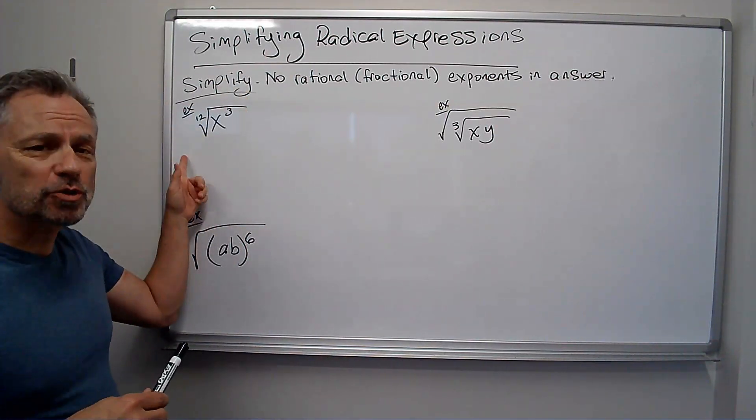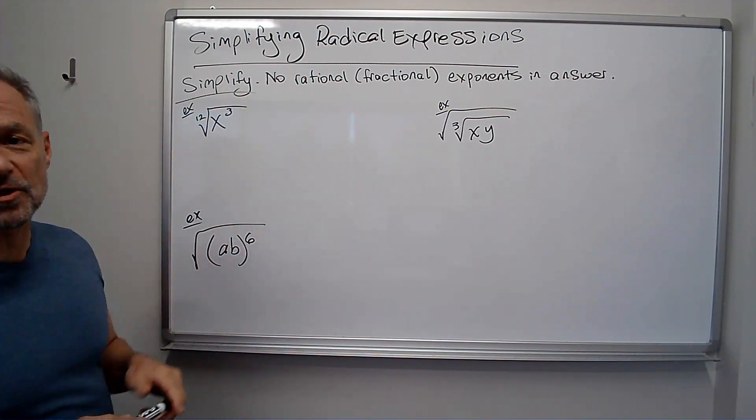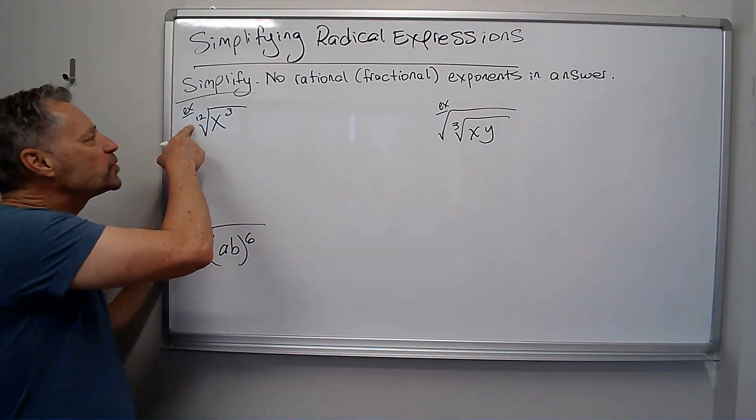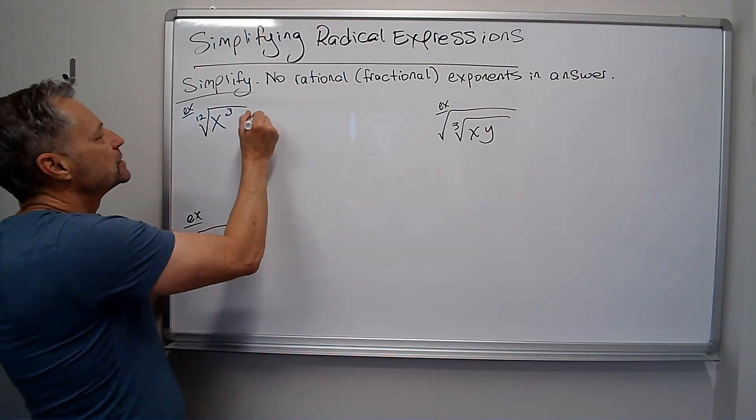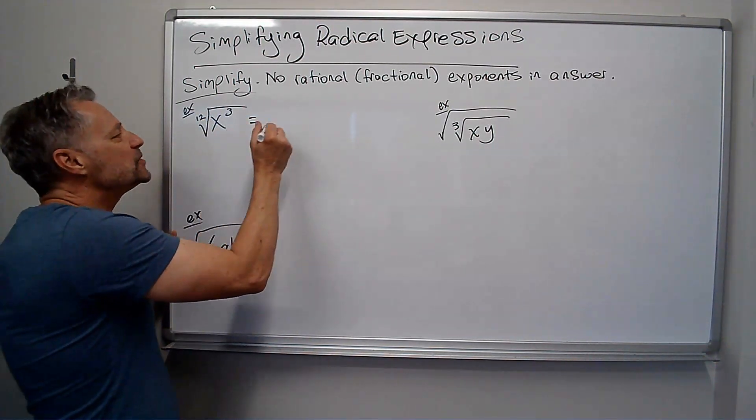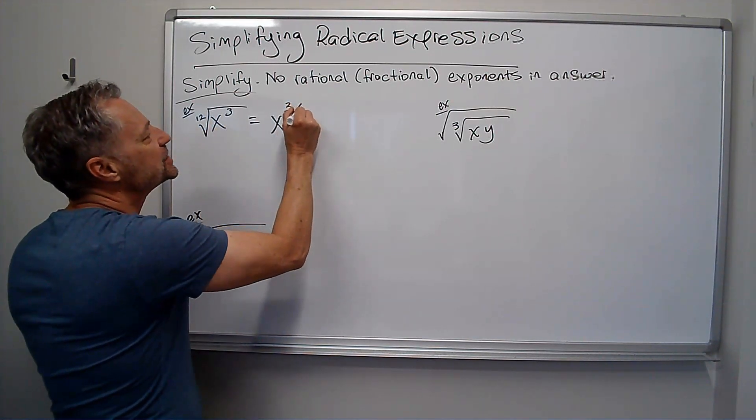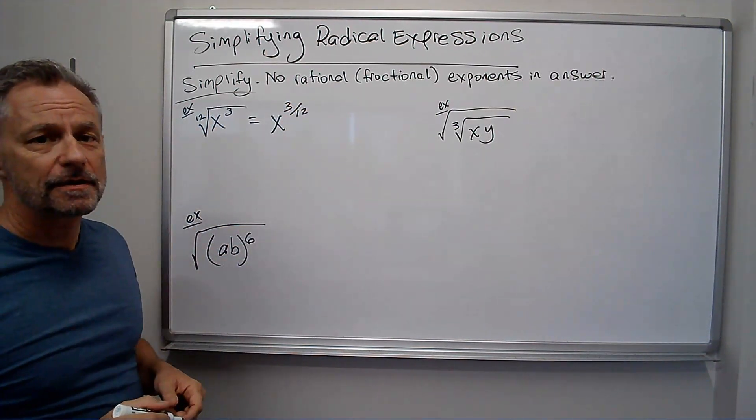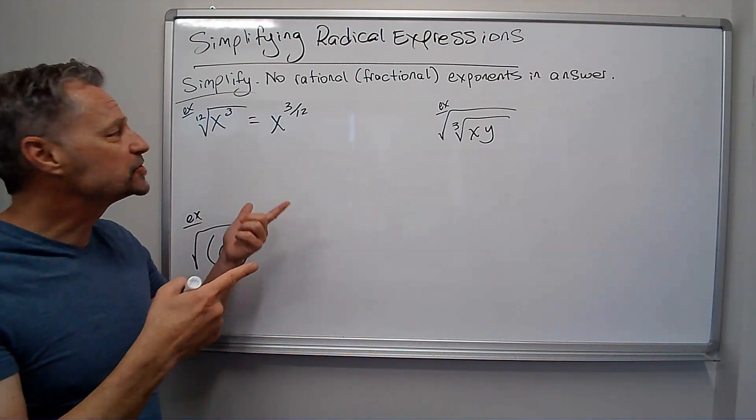We've got this one, it's the twelfth root of x to the third power. Well, remember the twelfth root means the one twelfth power. We can rewrite this as x to the three twelfths power, and then that can be reduced to just one-fourth.